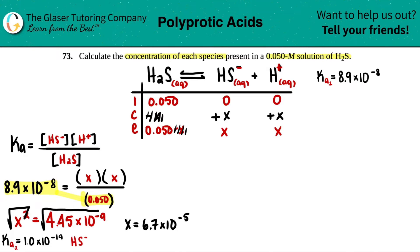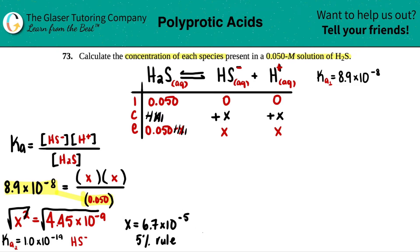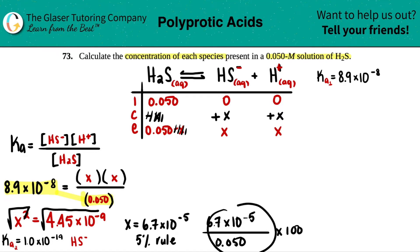Before going back to the equilibrium line, we have to do the 5% rule check — to verify that we could treat the change X as negligible in the math. Take the value you got, 6.7 × 10⁻⁵, divide it by the initial value 0.050, and multiply by 100. If this answer is 5 or less, we can proceed with the approximation. If it's over 5, we'd have to include the minus X term properly.